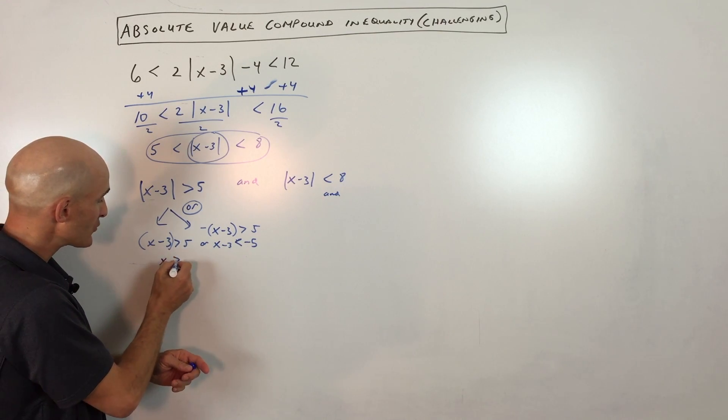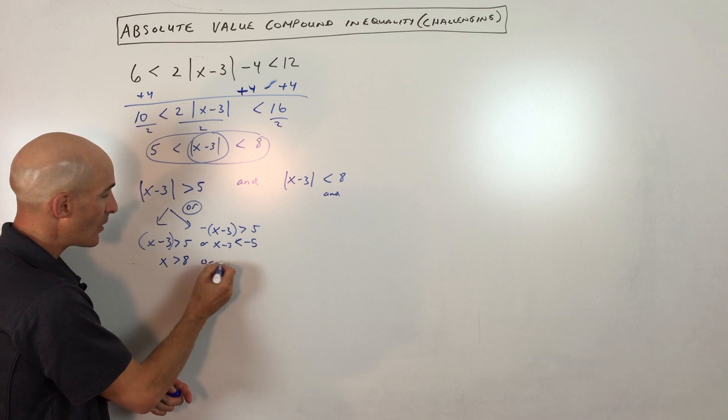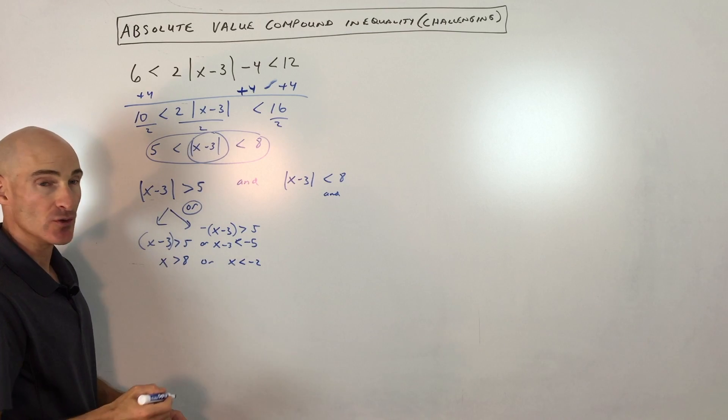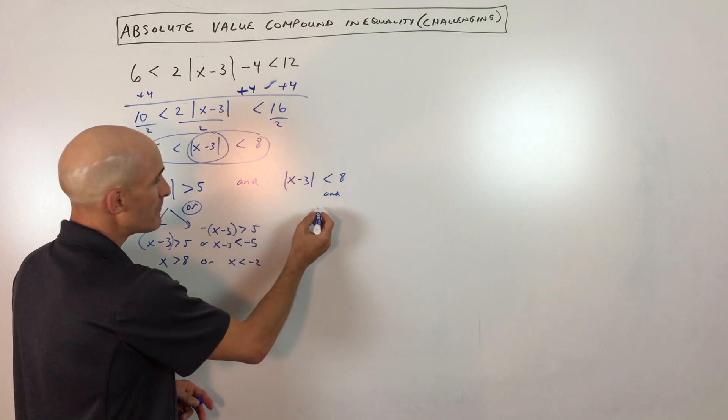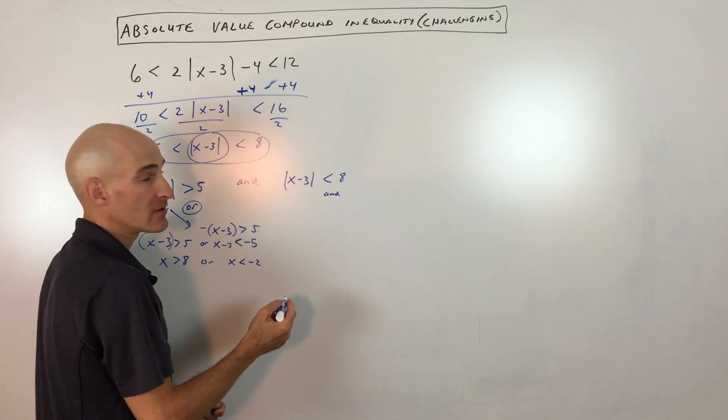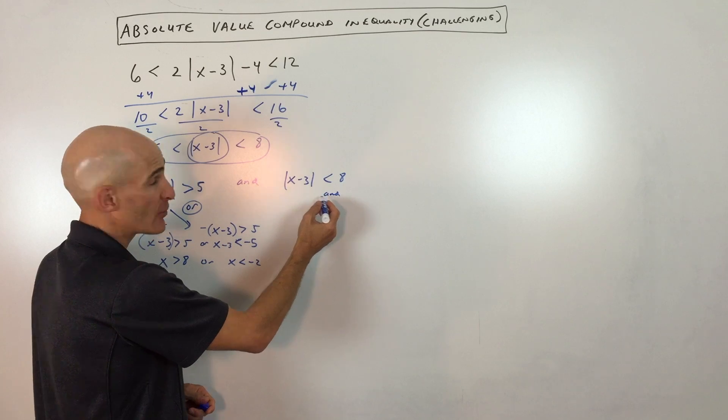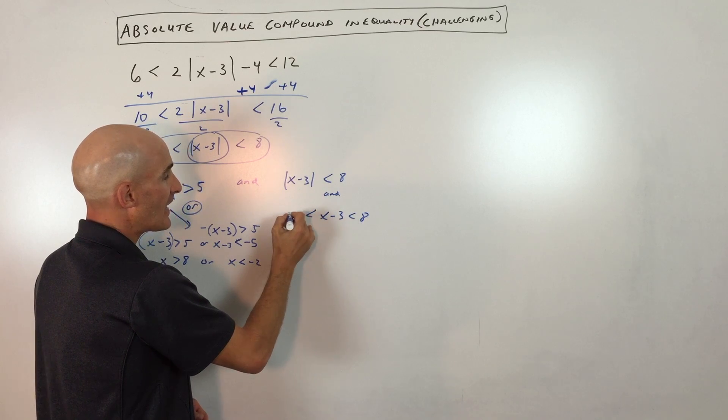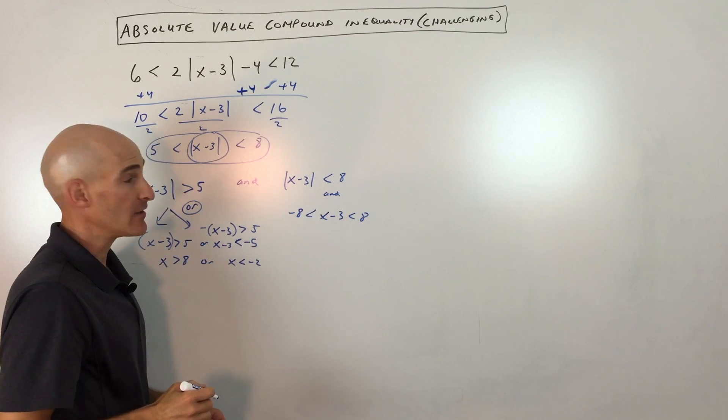So continuing on, if we add 3 to both sides, x is greater than 8, or add 3 to both sides here, x is less than negative 2. For this problem, because it's a compound, an and problem, we can write this as a compound inequality, x minus 3 is less than 8 and greater than negative 8.